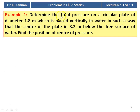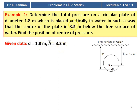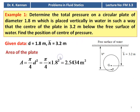Example number 1. Determine the total pressure on a circular plate of diameter 1.8 meter, which is placed vertically in water in such a way that the center of the plate is 3.2 meter below the free surface of water. Find the position of the center of pressure. Diameter is 1.8 meter, h_bar equal to 3.2 meter. Area of the plate A equal to pi by 4 d square, substituting pi by 4 into 1.8 square equal to 2.5434 meter square.